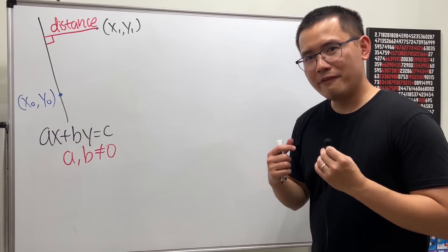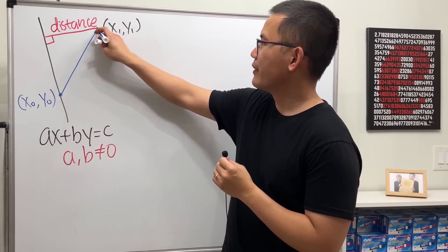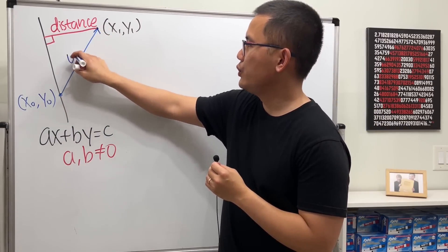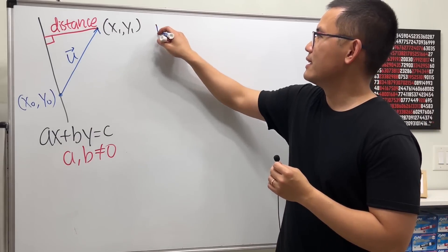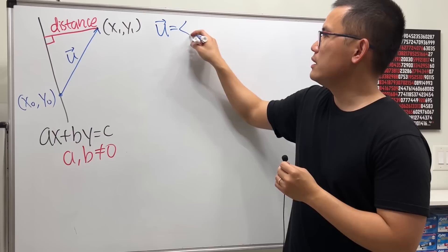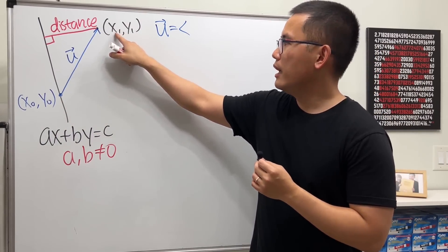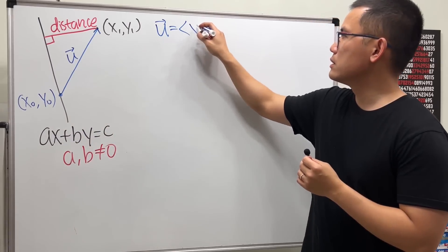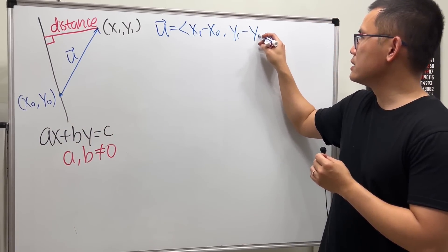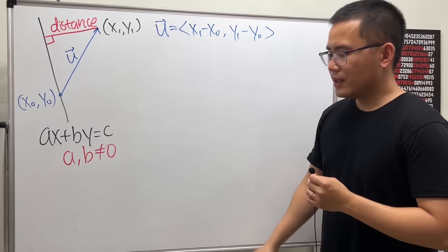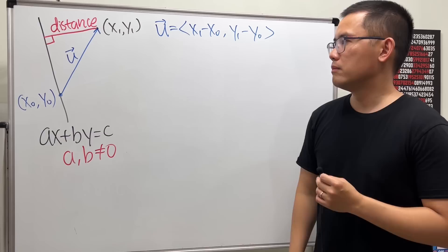Now let's create a vector from that point on the line to our given point. We'll call this vector u. In component form, u = (x₁ − x₀, y₁ − y₀).